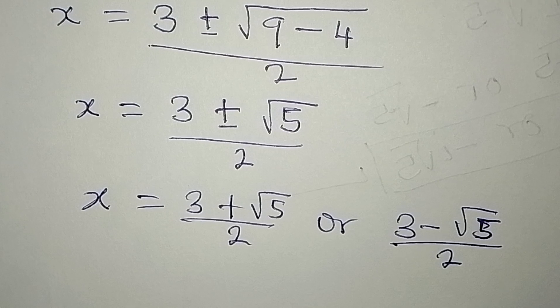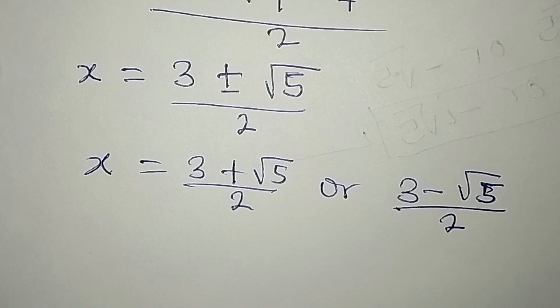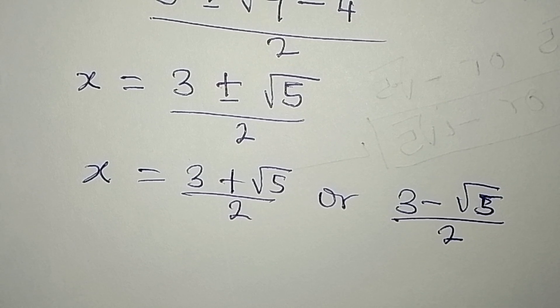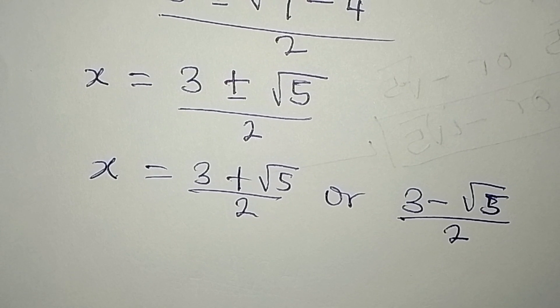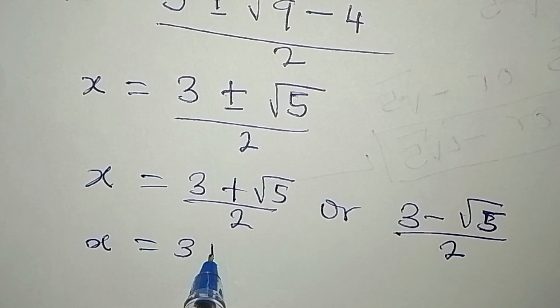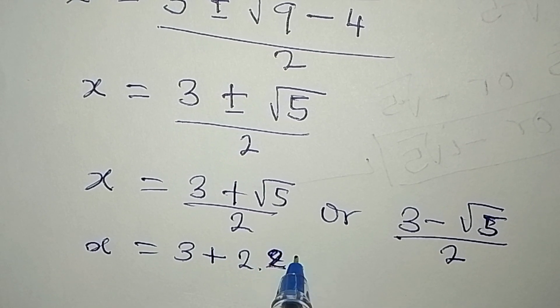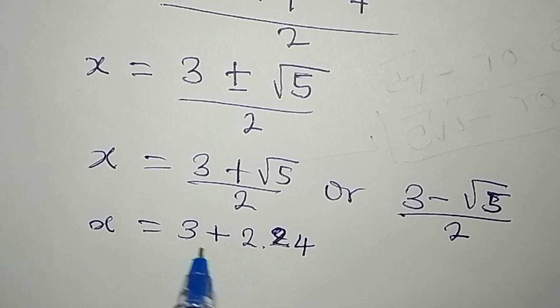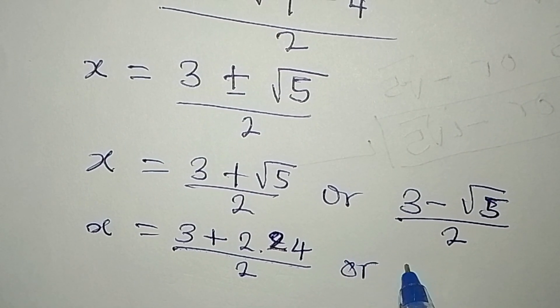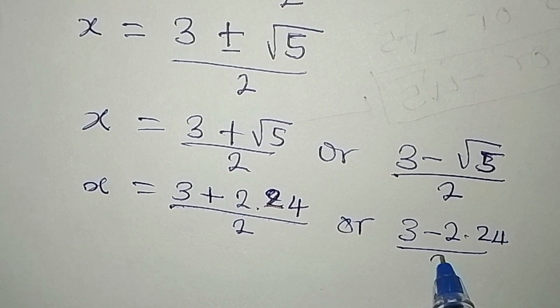But then, you can decide to get your answer in decimal form. So I'm going to get this in decimal form as I get the square root of 5 in decimal form. So from here, x will now be 3 plus square root of 5 is 2.24 approximately. Then we divide this by 2. Or we have 3 minus 2.24. We still divide this by 2.